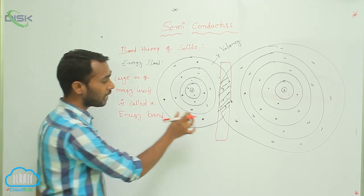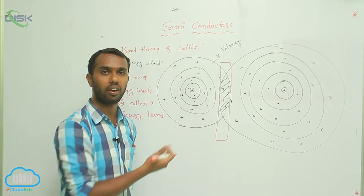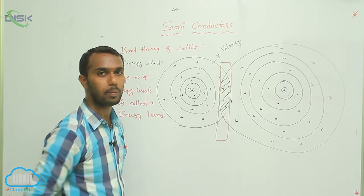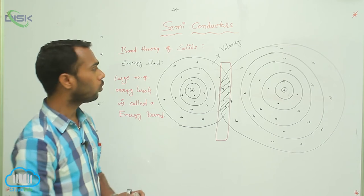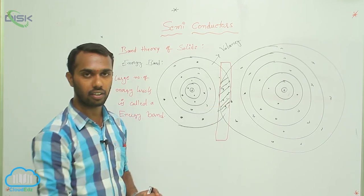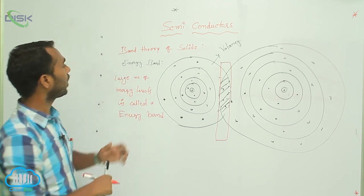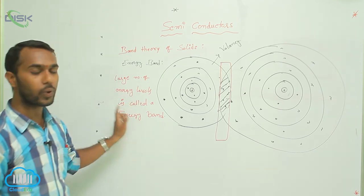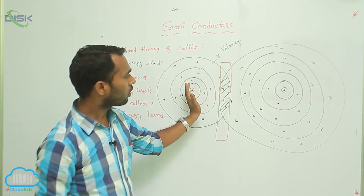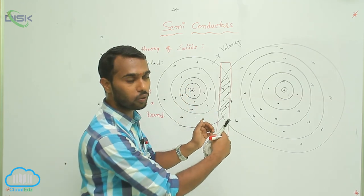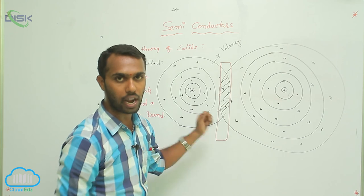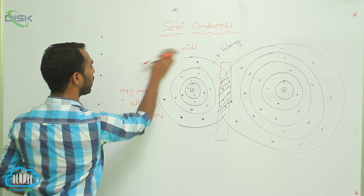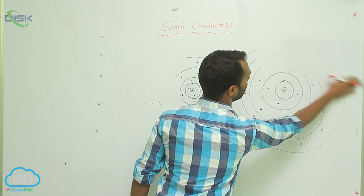This energy band gives the answer about which materials are conductors, which are semiconductors, and which are insulators. Energy band is very important — it is a large number of energy levels. In a solid, the valency orbitals of atoms overlap, and this overlapping gives information about conductors, semiconductors, and insulators.